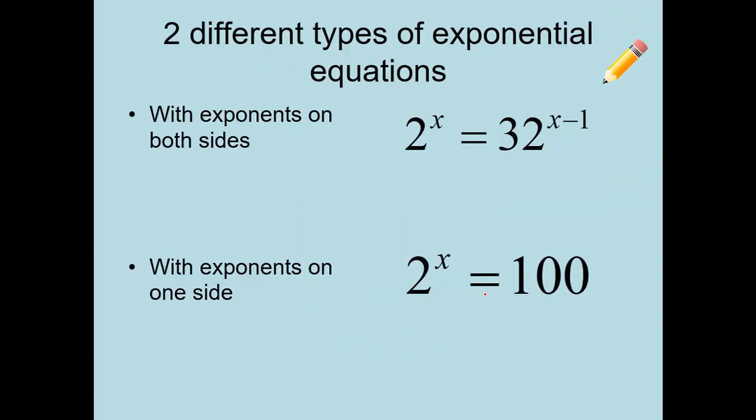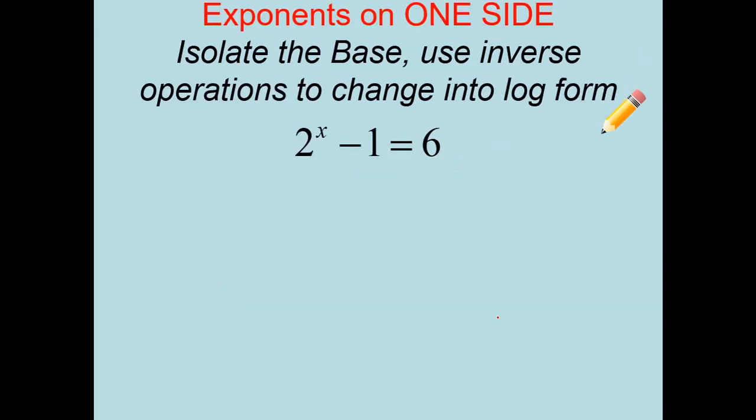Now, two different types of exponential equations. We have solved this one. This is old news right here. Okay? You guys have done this. Now, the things that you have not done is when you have exponents on only one side. This is where those logarithms that we just worked with are going to come into play. So here's how you're going to solve those particular problems. You're going to isolate the base and use inverse operations to change into log form. So I'm going to add 1 because I'm going to get the base alone. So 2 to the x is 7.